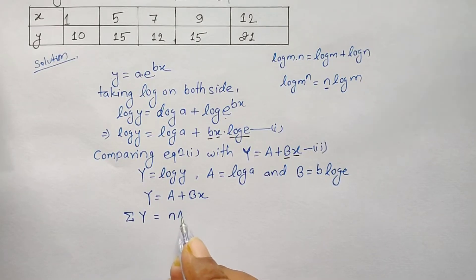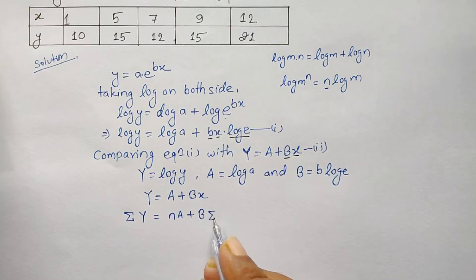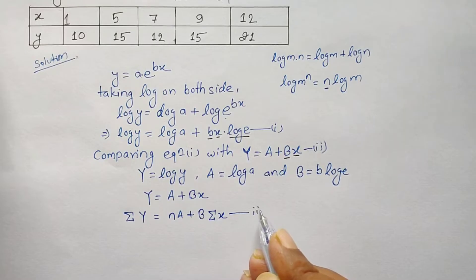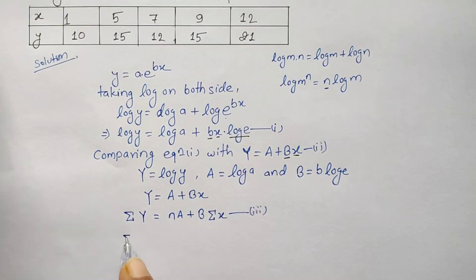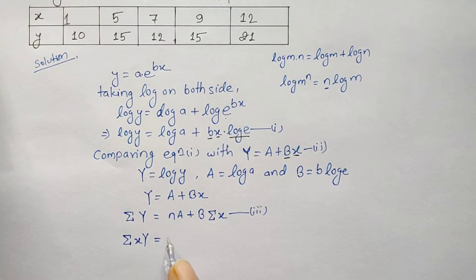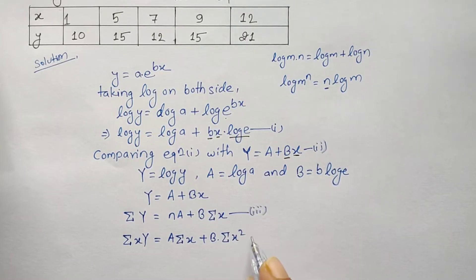Rewriting as Y = A + Bx, for curve fitting the normal equations are: summation Y equals n times A plus B times summation x (equation 3), and summation xY equals A times summation x plus B times summation x squared (equation 4). We now need the values of summation x, summation x squared, summation Y, and summation xY.